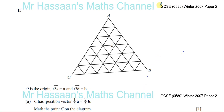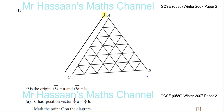Question number 15 from IGCSE Winter 2007 Paper 2, Cambridge International Exams — a question about vectors. O is the origin. The vector from O to A is the vector **a**, all the way from the origin up to A. The vector from O to B is the vector **b**. So vector **a** goes in one direction and vector **b** goes in another direction.